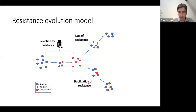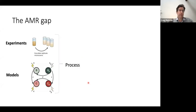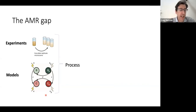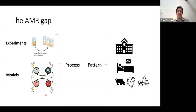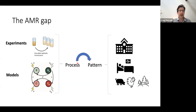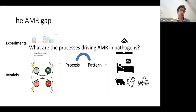Compensatory adaptations offset the costs associated with resistance and allow resistance to be stably maintained even in the absence of antibiotic use. We now have a mature conceptual framework for understanding the evolution of resistance, but this framework comes largely from test tube experiments and mathematical models. These are great for understanding the basic processes driving resistance spread, but the problem is connecting them with real-world patterns of resistance. What we don't have a good handle on is to what extent real-world patterns reflect these processes — what I call the AMR gap. My lab has spent the last six years trying to bridge this gap by asking what processes are driving AMR in real-world pathogen populations.